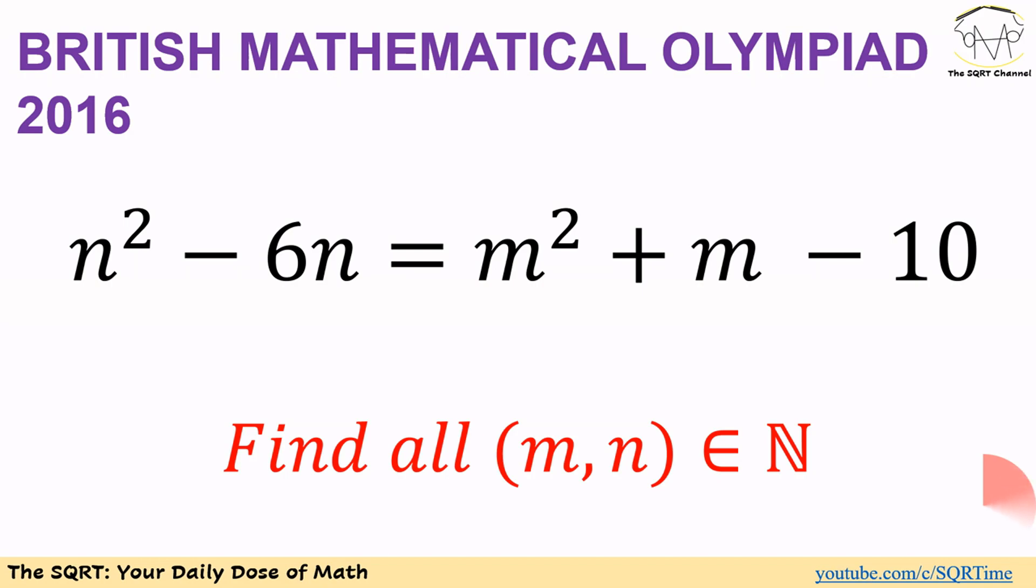In this problem, we have n to the power of 2 minus 6n is equal to m to the power of 2 plus m minus 10, and we want to find all possible positive integers that we can have for m and n to satisfy this equation. Before moving forward to talk about the solution, make sure that you pause the video to think about the problem.